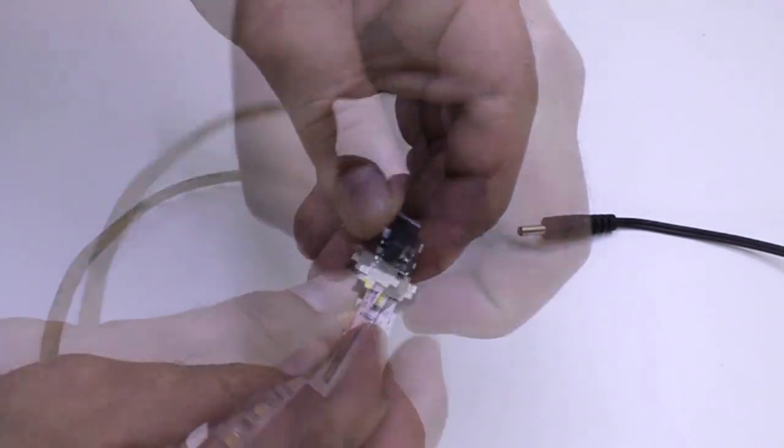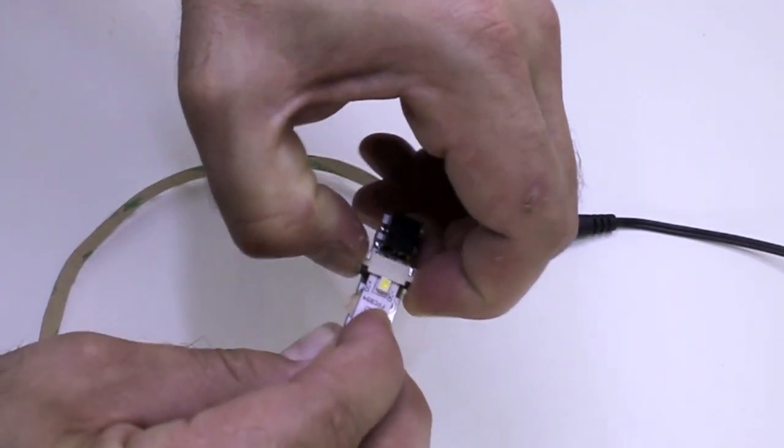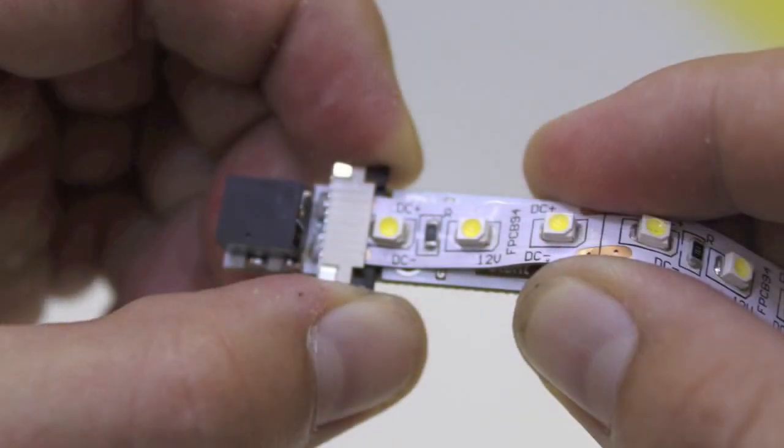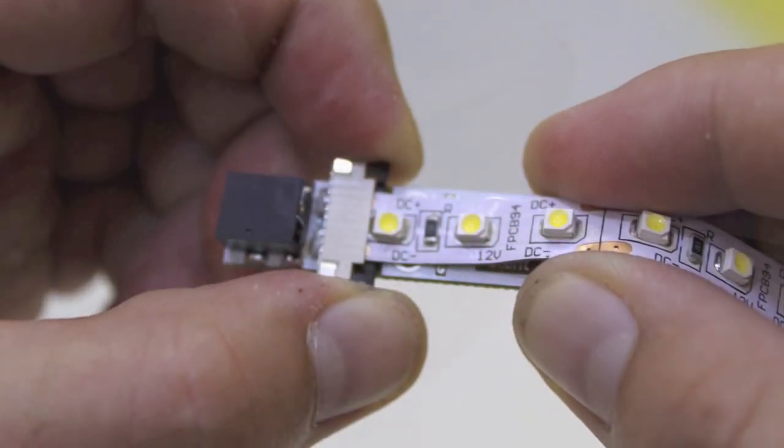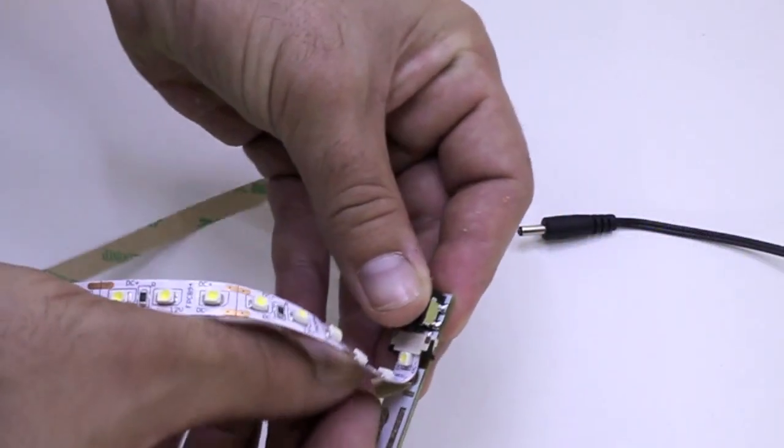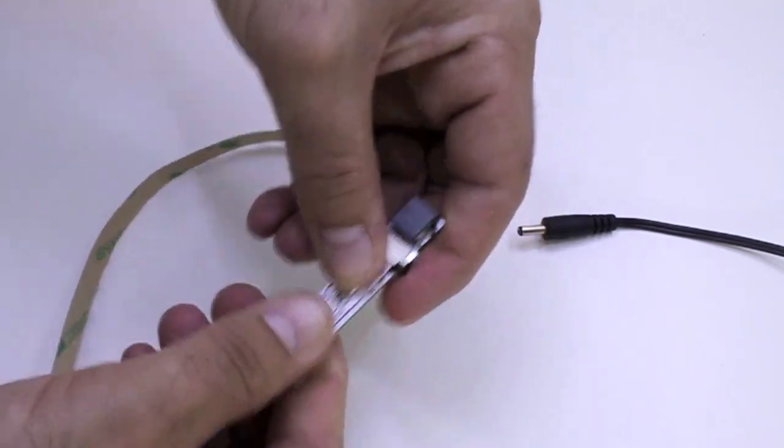Now lock the flex strip in place by pushing the black piece back into the white piece. You may need to wiggle it in there to make sure that the connection is fully locked. Peel the adhesive off the flex strip and stick it firmly to the connector.